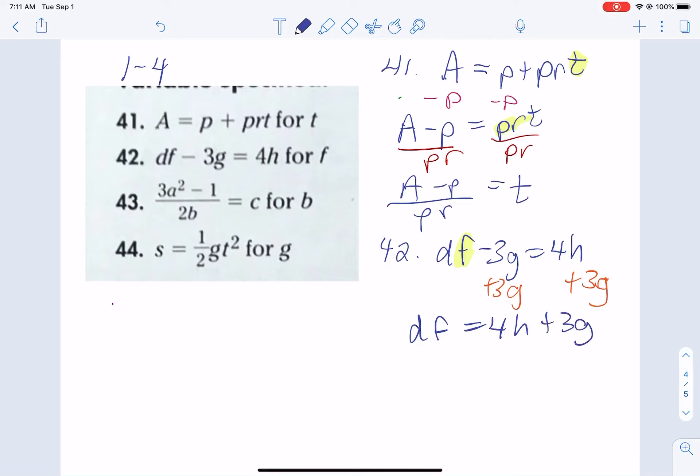Now, let's divide both sides so that we can get rid of the D here. Divide both sides by D. So F is 4H plus 3G all divided by D. So there's 42.